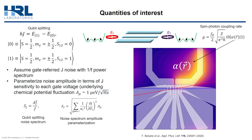In particular, the quantities we want to model are, firstly, the exchange energy J, which is defined to be the energy difference between the two different S equals one-half states, which basically differ in whether the first two electrons form a singlet or a triplet. We're going to assume that there is a gate-referred J noise with 1/f character, and parameterize the amplitude of that noise in terms of the derivatives of J with respect to each gate voltage.